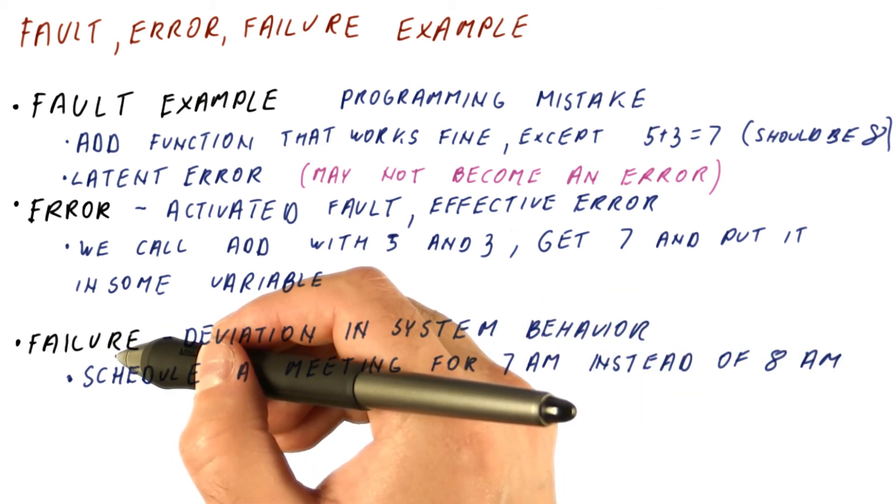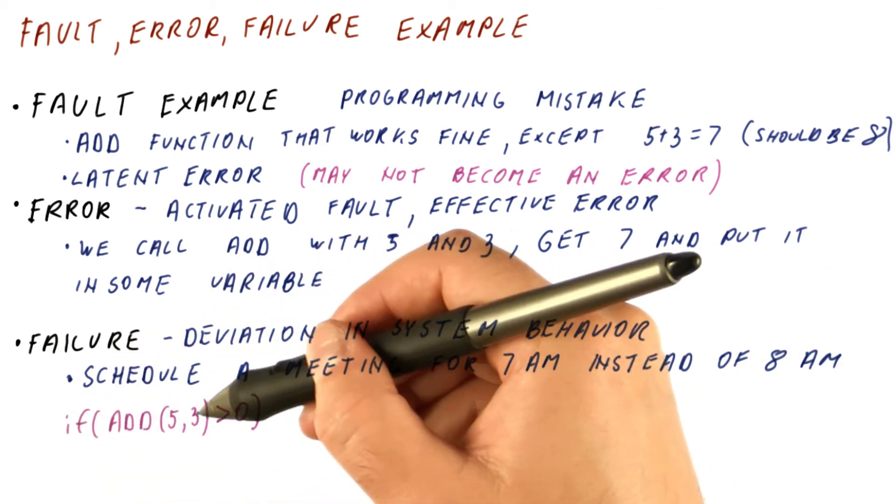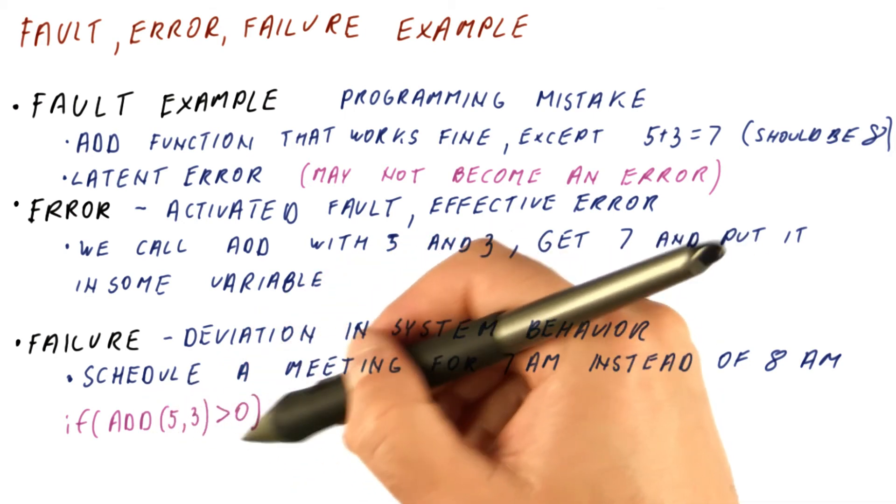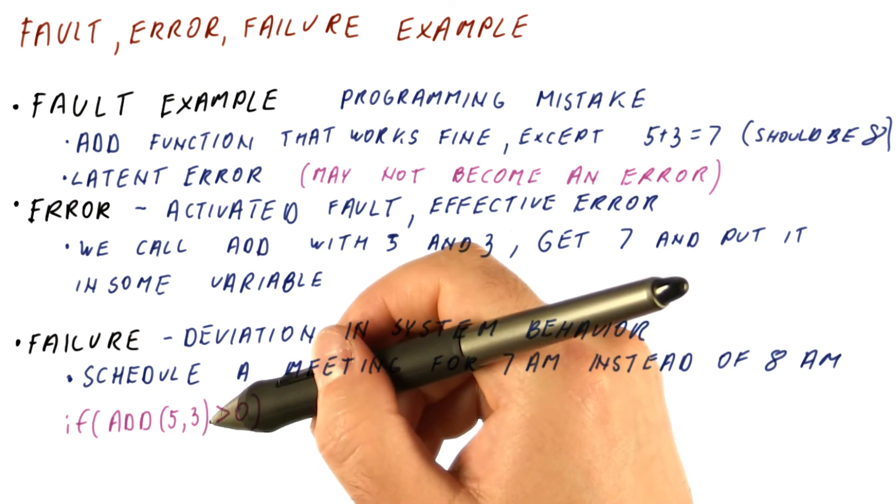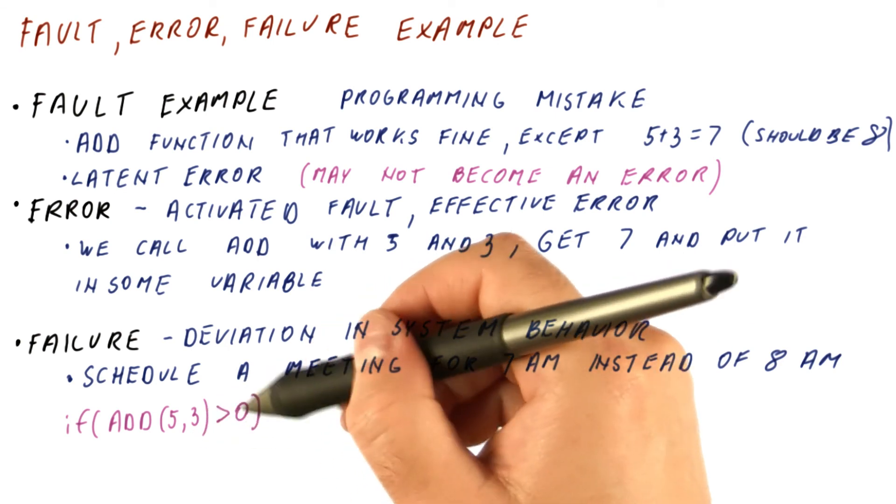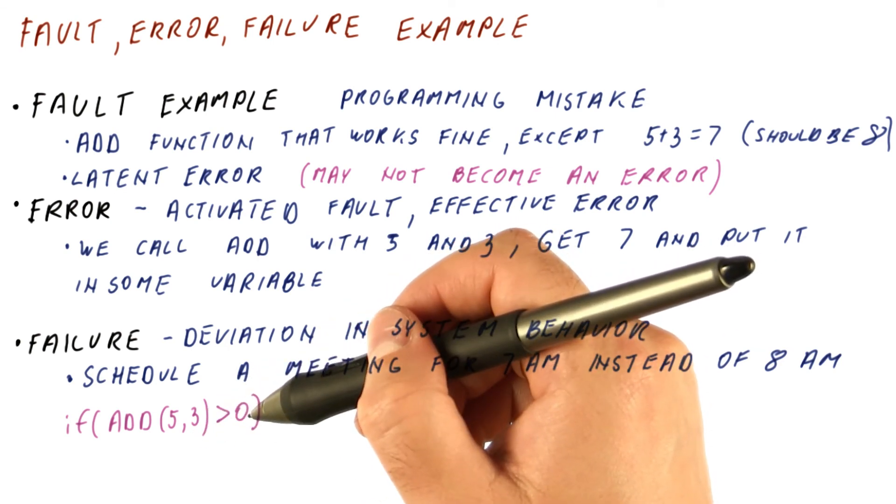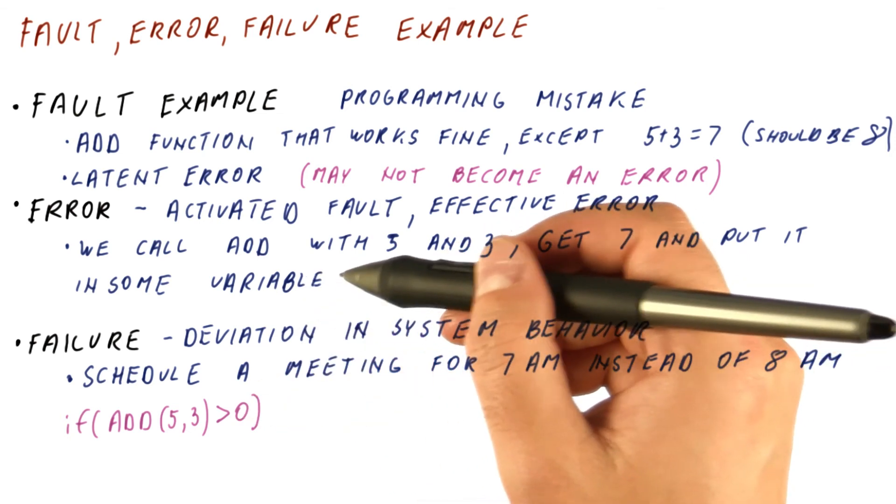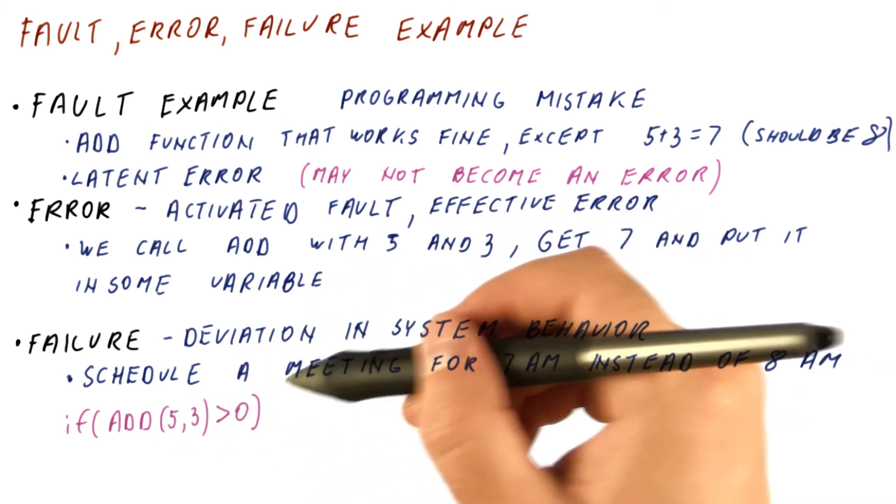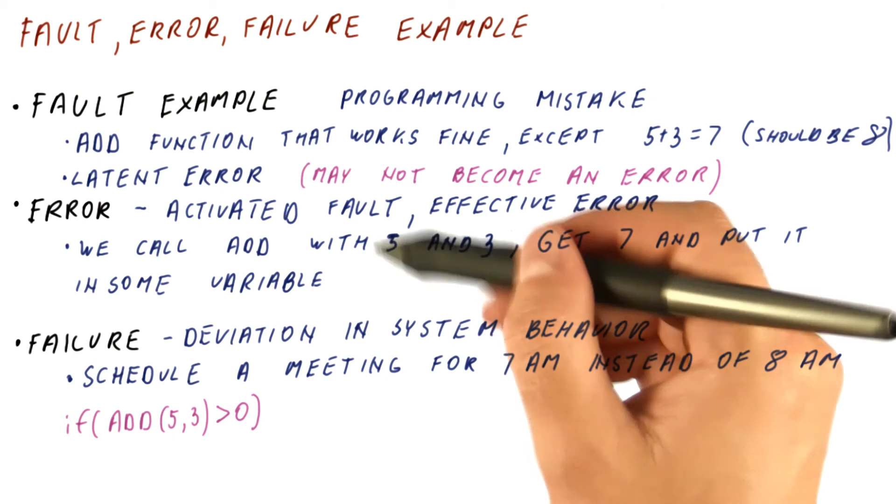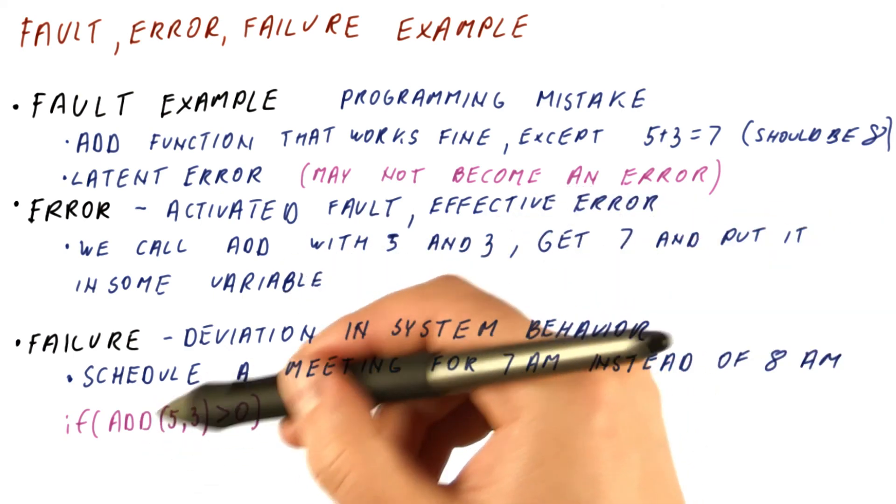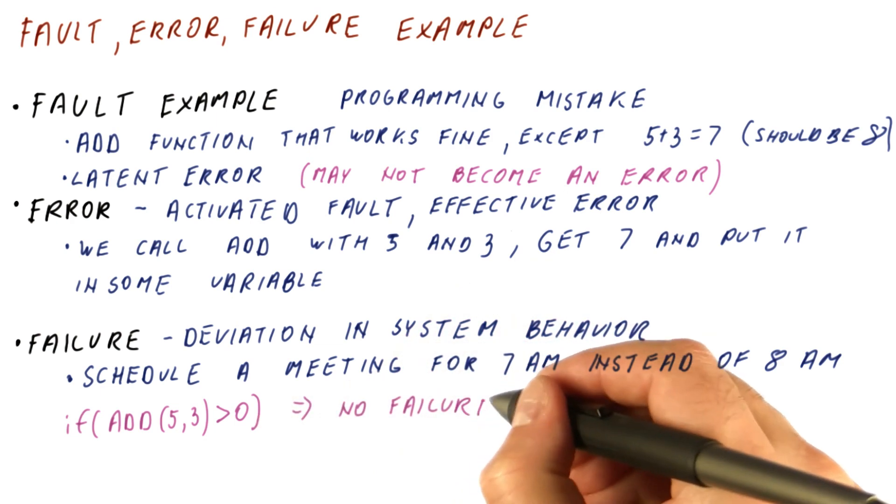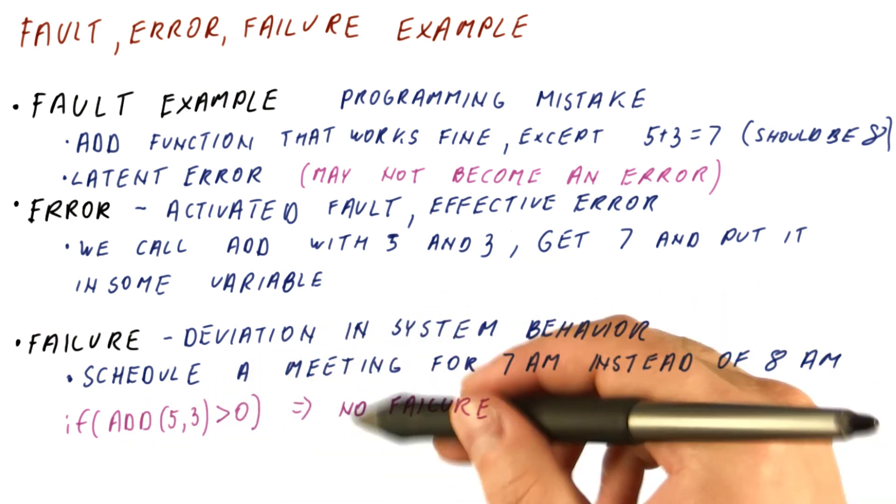Another example here would be something like, if we check, for example, whether this function returns something larger than 0, then when it returns 7 instead of 8, and we store that in a register, compare it to 0, see that it's still larger than 0, now we got an effective error because a register held the wrong value, but the only thing we did with this value still caused the program to function normally. So in this case, we have an error, but we don't have a failure.